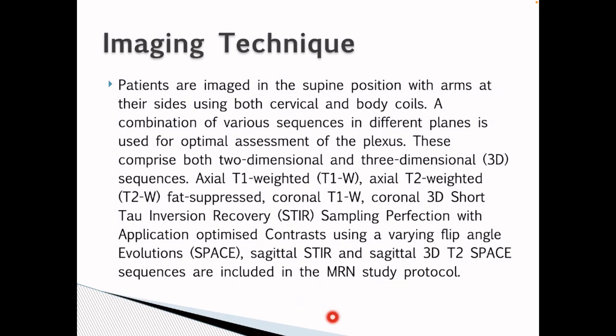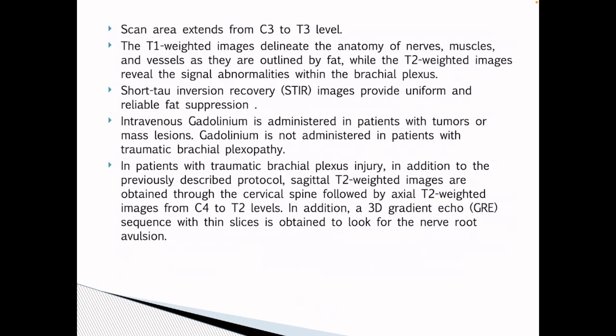axial T2 fat suppressed, coronal T1, STIR sequence, space sagittal STIR and sagittal 3D T2 SPACE sequences. Scan area extends from C3 to T3 level. The T1-weighted images delineate the anatomy. The T2-weighted images reveal the signal abnormalities within the brachial plexus. STIR images provide uniform and reliable fat suppression. IV gadolinium is administered in patients with tumor or mass lesion and is generally not administered in patients with traumatic brachial plexopathies.